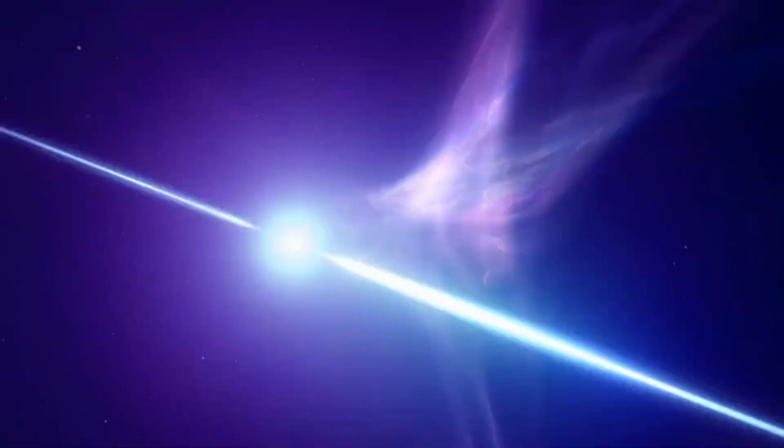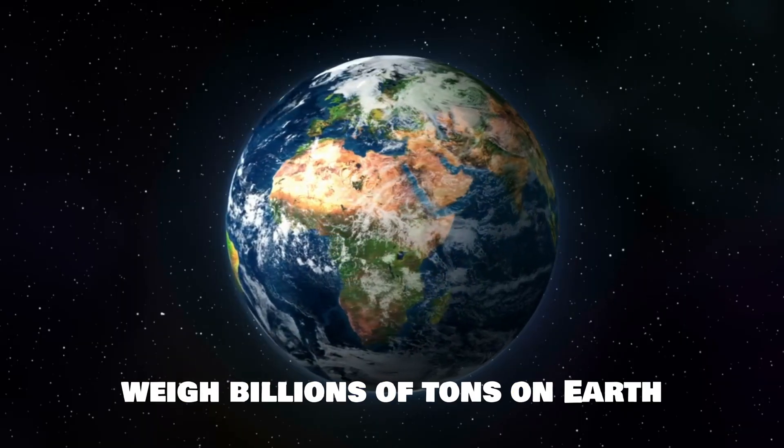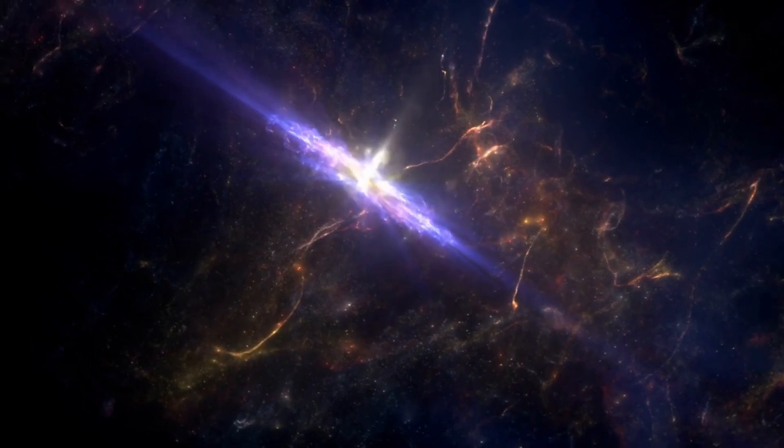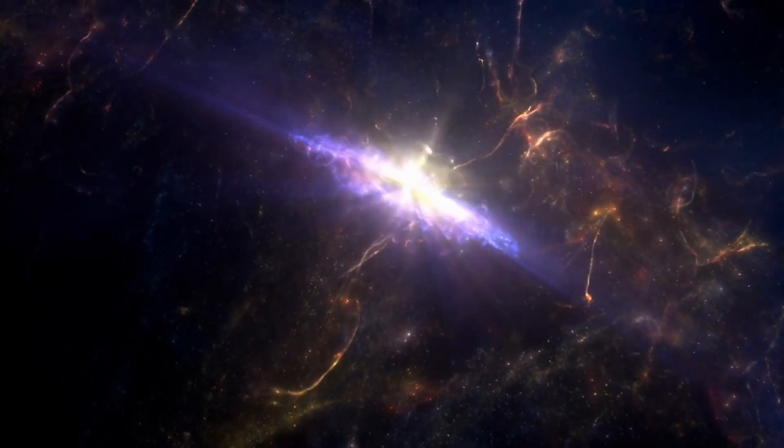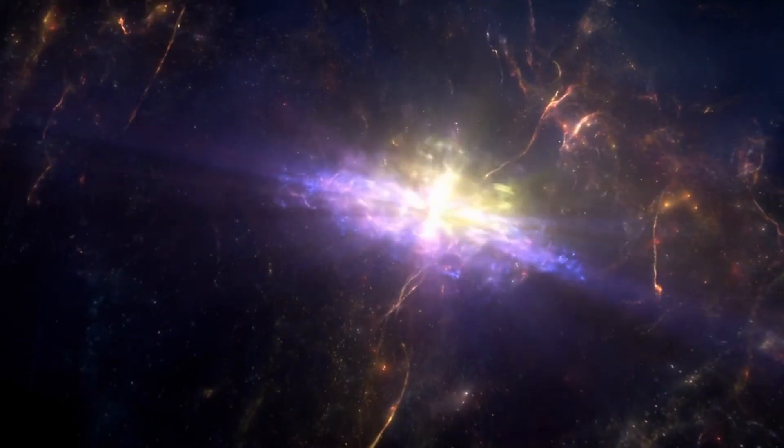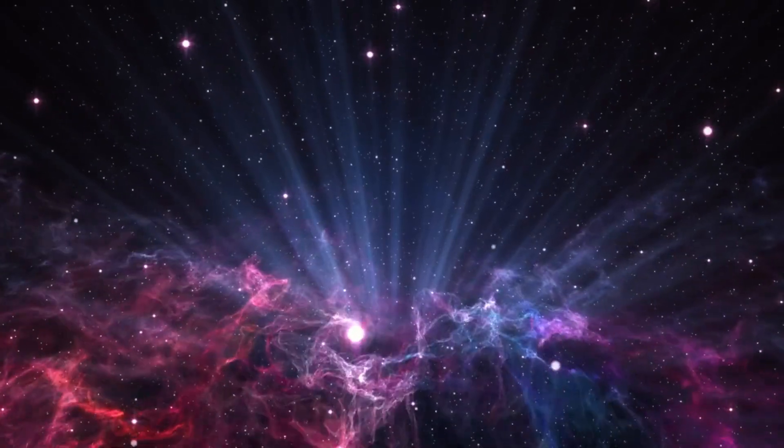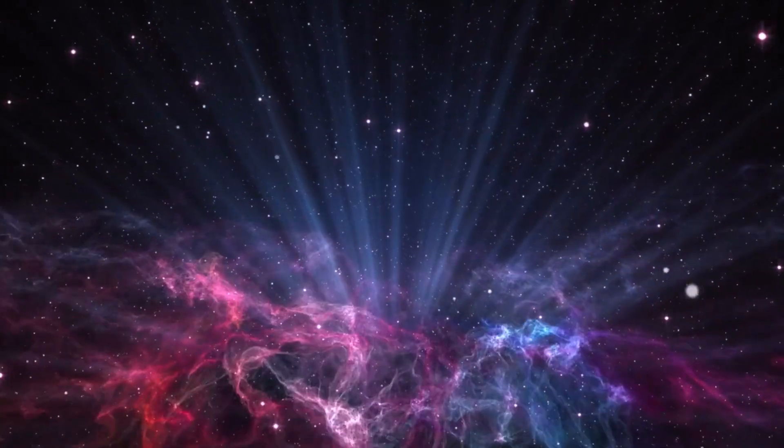Due to this extreme density, a sugar cube-sized amount of neutron star material would weigh billions of tons on Earth. The intense gravitational pull of neutron stars is also responsible for phenomena like pulsars, where beams of radiation sweep across space like cosmic lighthouses.